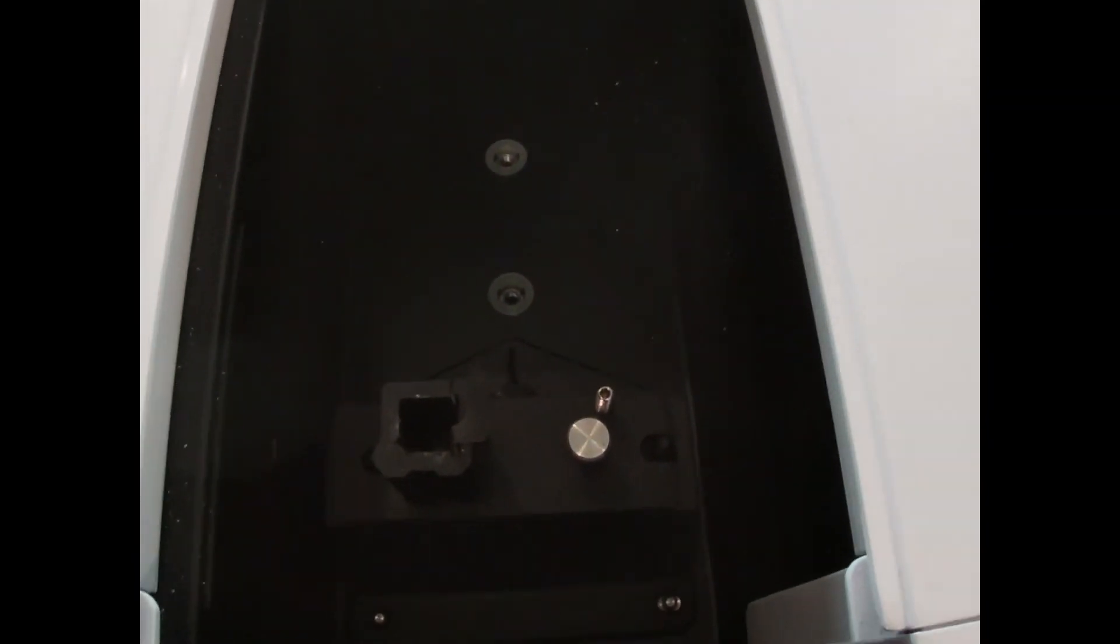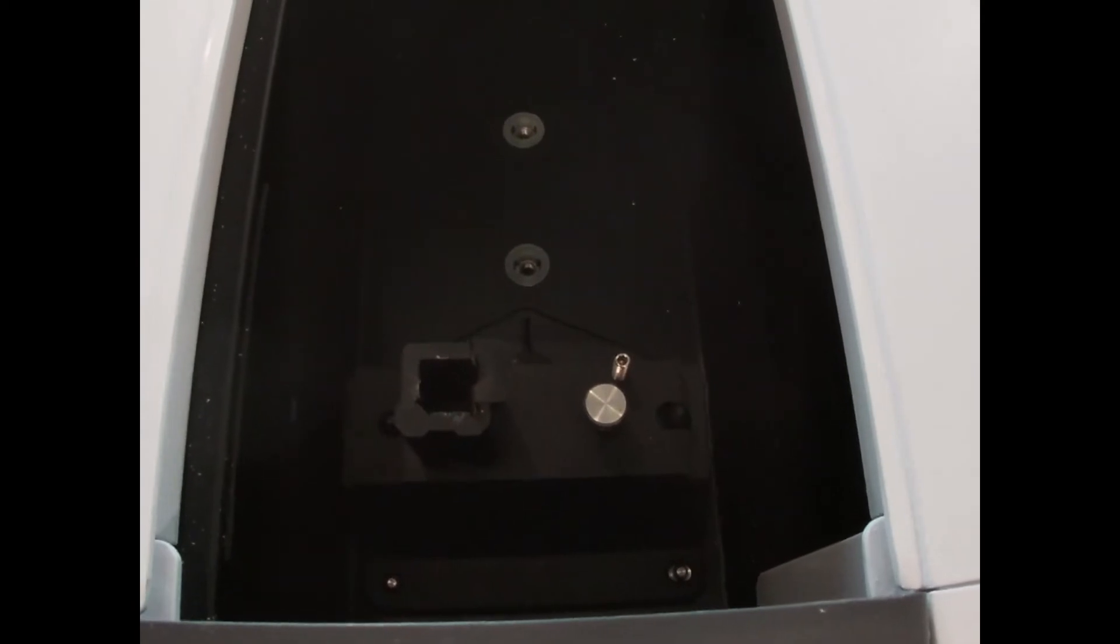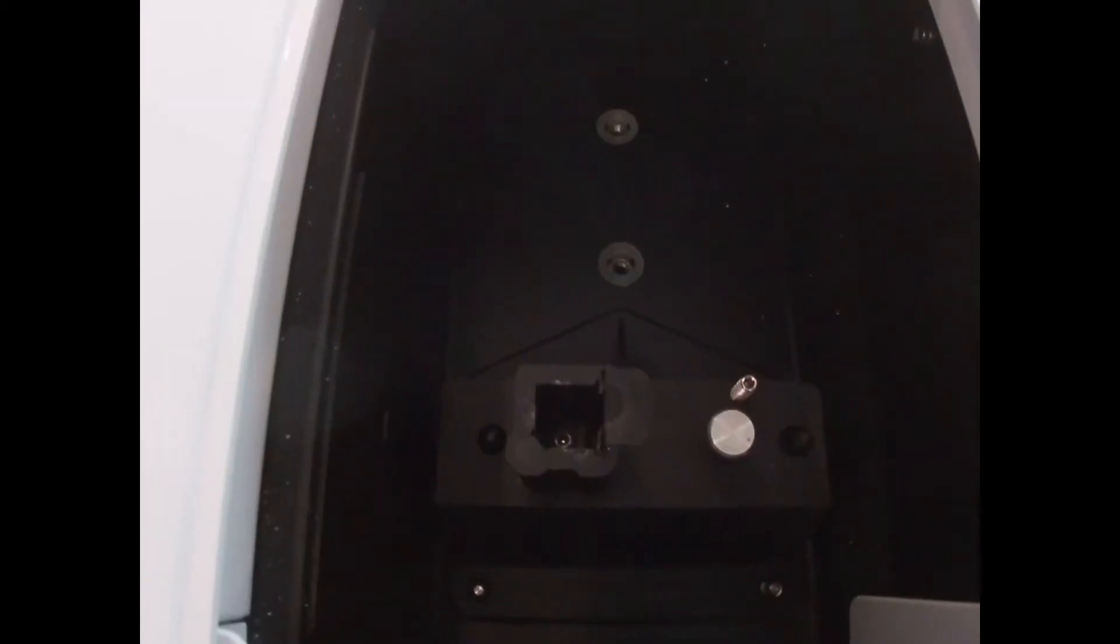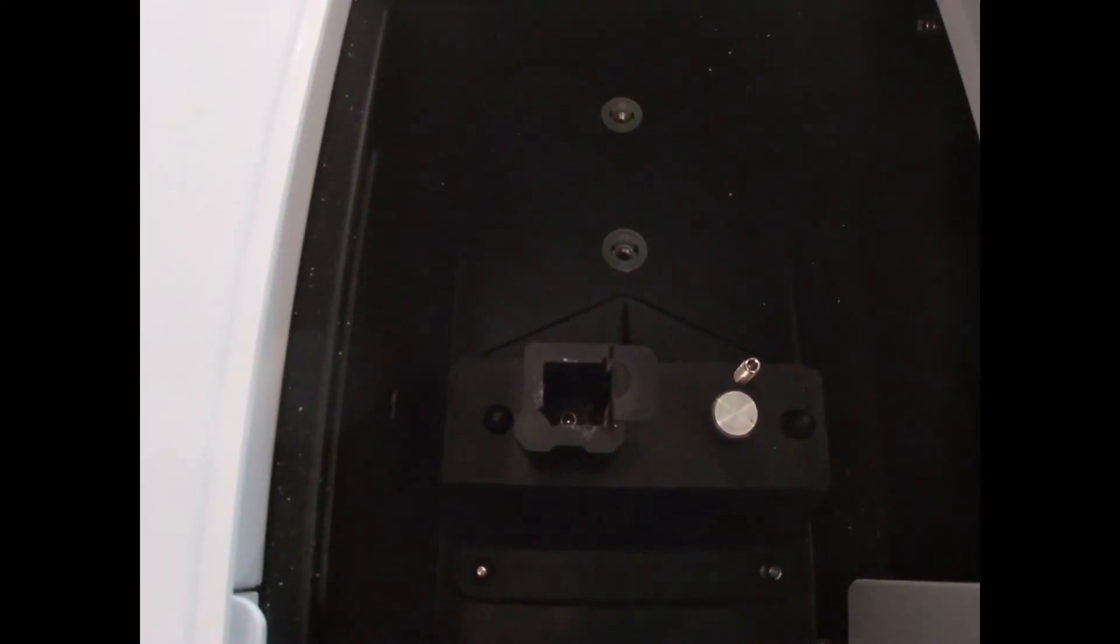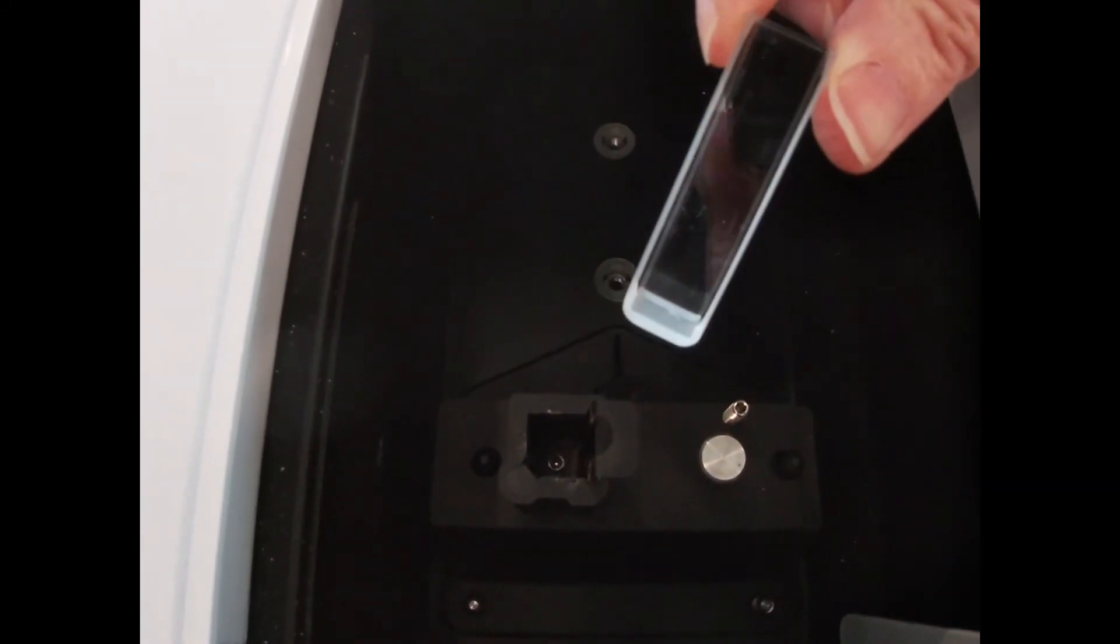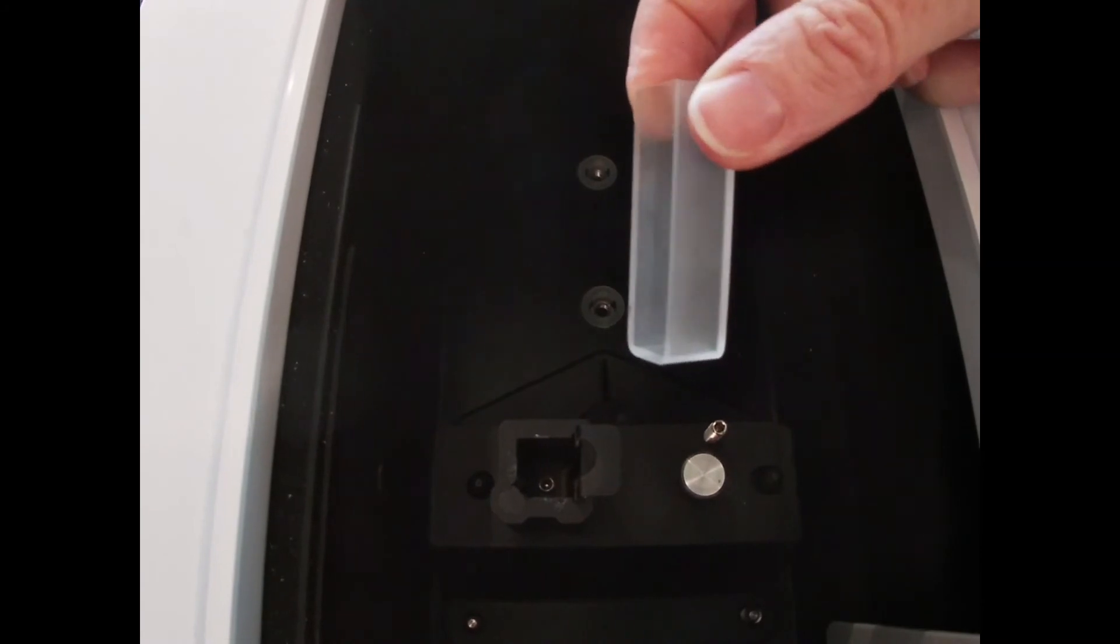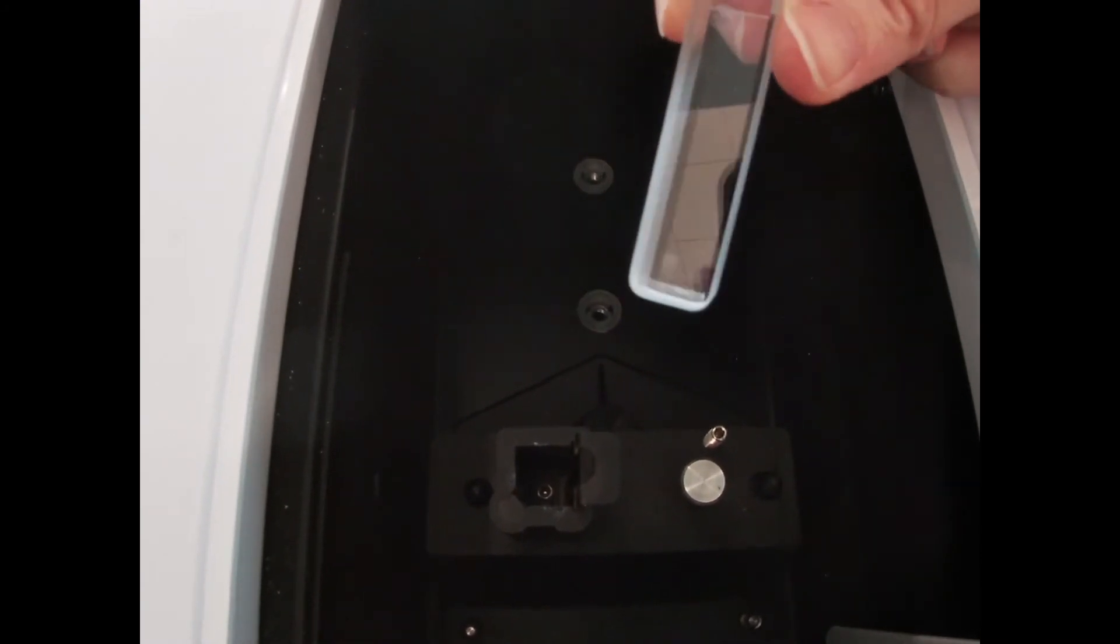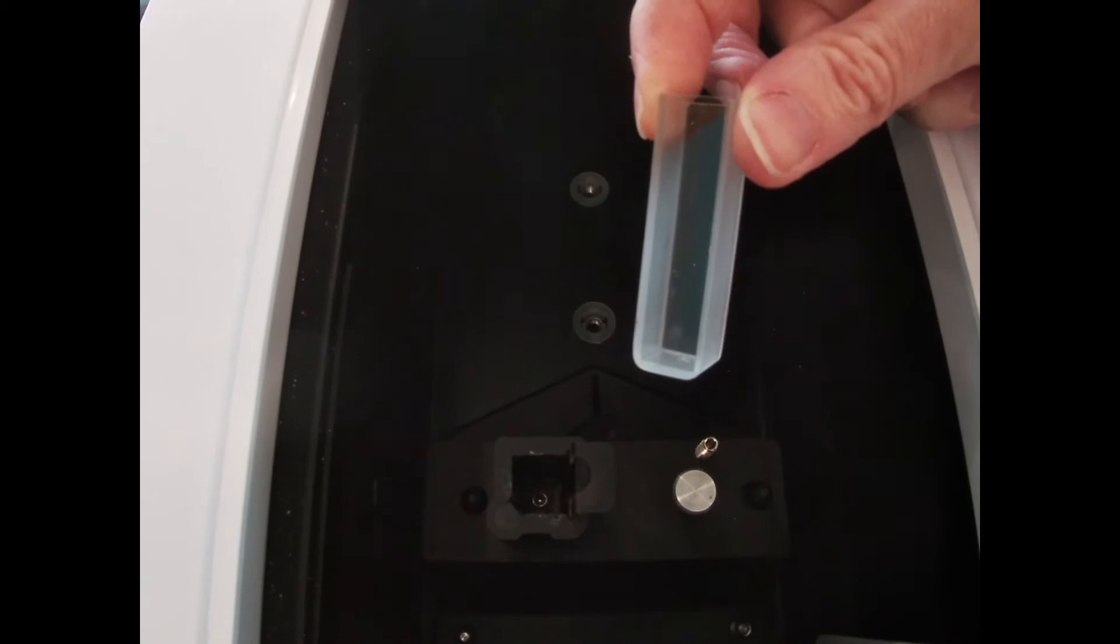Therefore, we can use this for quantitative analysis of samples that absorb in the UV or visible range. Our sample cells are cuvettes. They are optically transparent in a single pathway, so the incident beam strikes one side and the transmitted radiation comes out the other and strikes the detector.